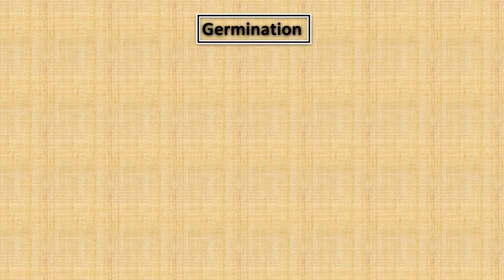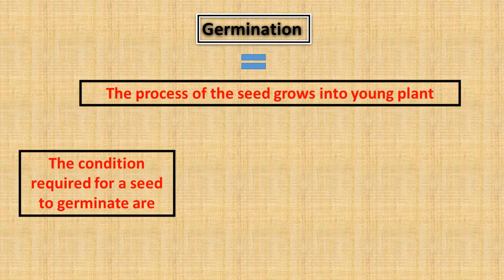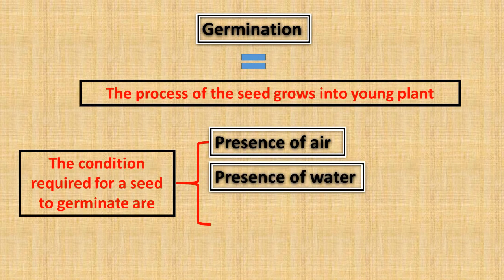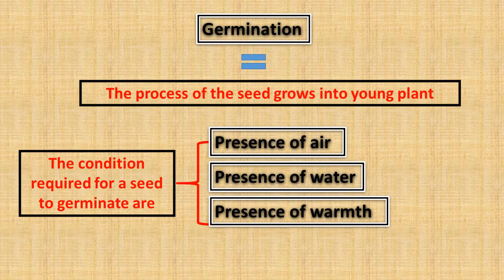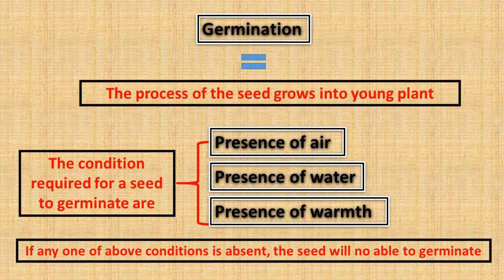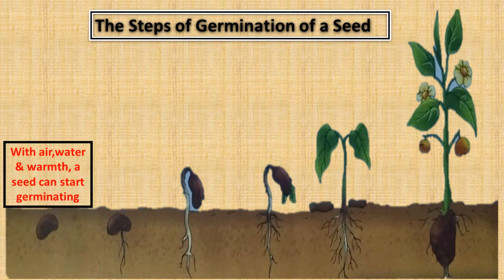Germination is the process of a seed growing into a young plant. The conditions required for a seed to germinate are: presence of air, presence of water, and presence of warmth. If any one of these conditions is absent, the seed will not be able to germinate. With air, water, warmth, and a seed, germination can begin.